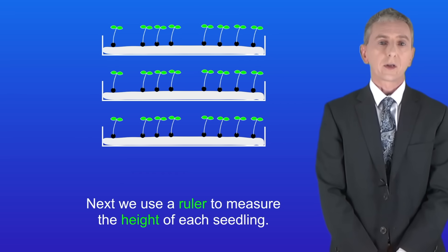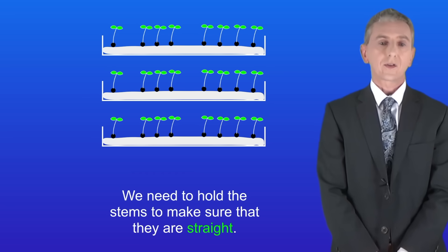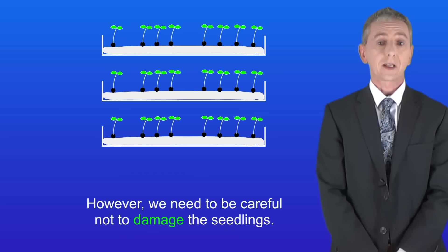Next we use a ruler to measure the height of each seedling. We need to hold the stems to make sure that they're straight. However, we need to be careful not to damage the seedlings.